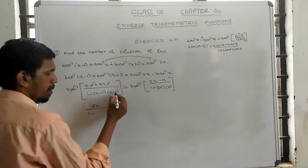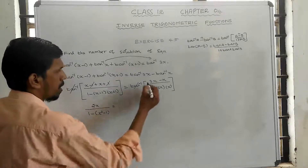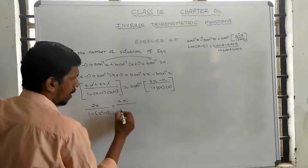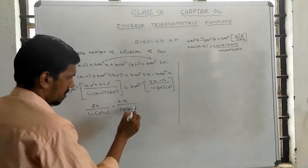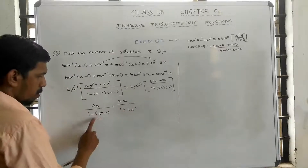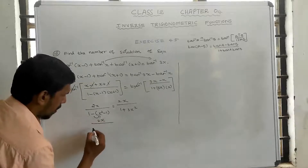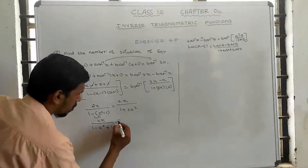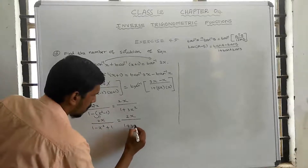Using the a plus b, a minus b formula: x square minus 1 equal to 2x divided by 1 plus 3x square. So we get 2x divided by minus 1 minus x square plus 1 equal to 2x divided by 1 plus 3x square.